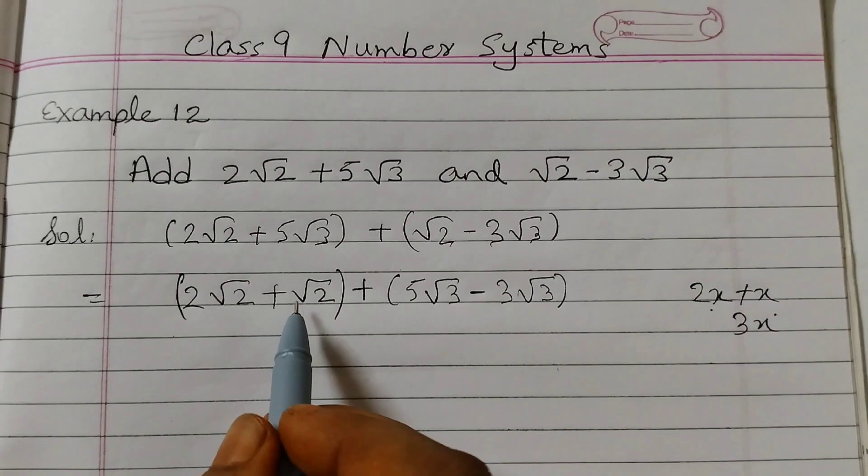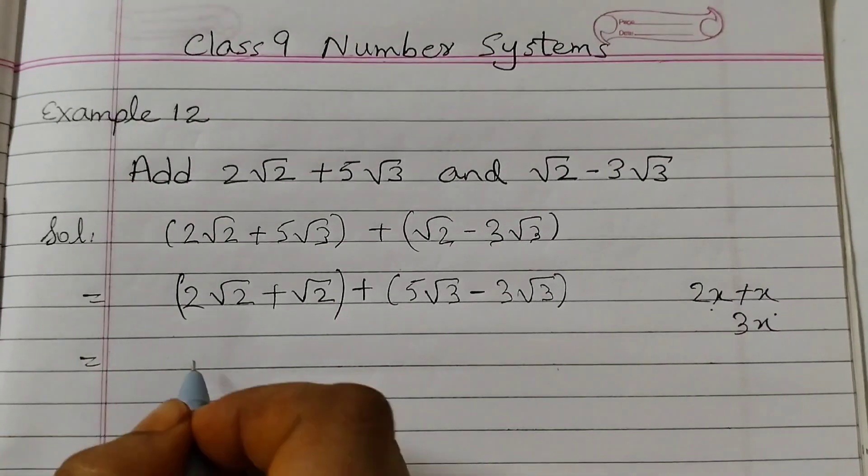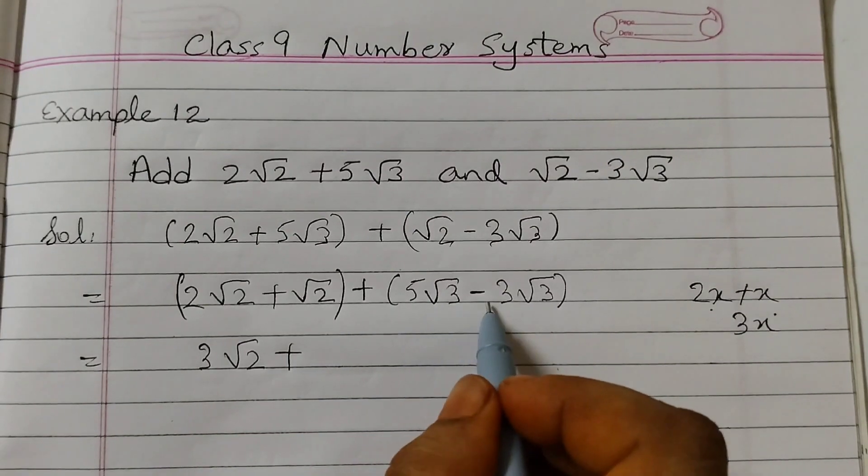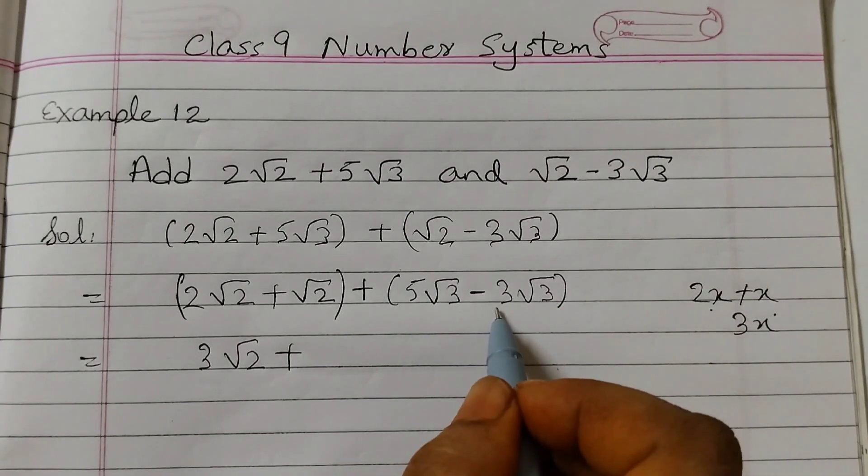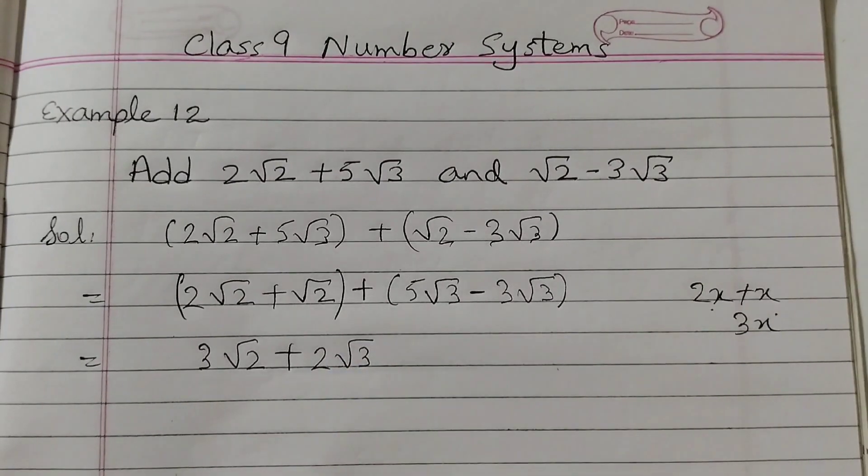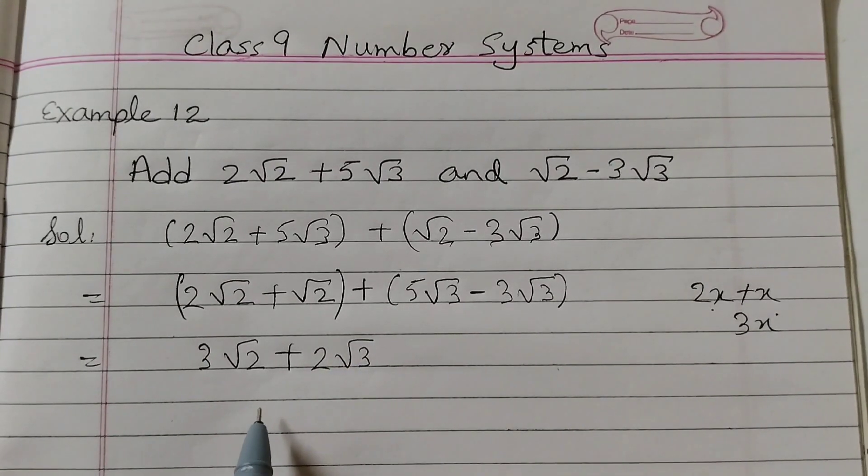So 3√2 + 5√3 - 3. 5 minus 3 is 2, so 2√3. And this is the answer. We cannot further simplify this.